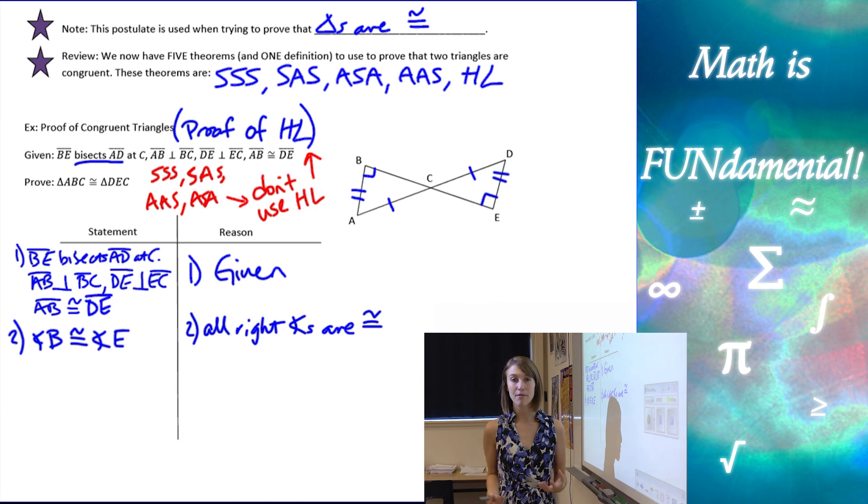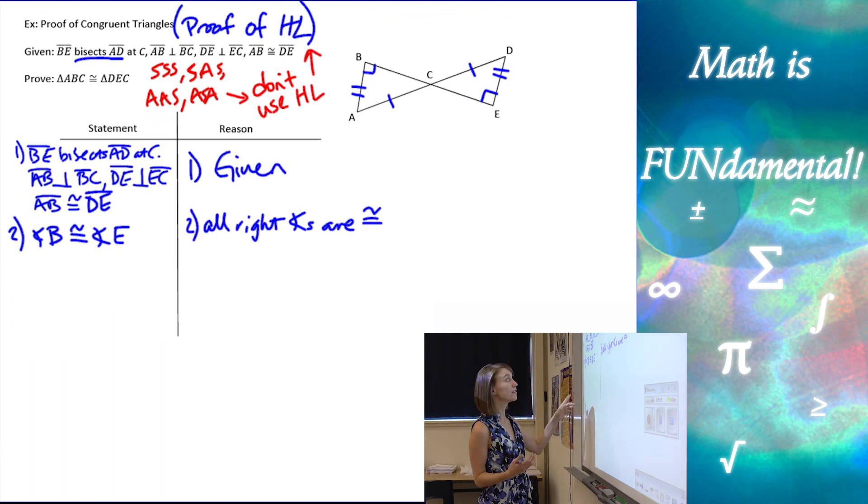Just explaining a little bit. I don't remember the exact name of the theorem, but it's okay. In a proof, if you don't remember the exact name, sometimes you can just explain what the theorem says. Here, I'm using the theorem that says all right angles are congruent.